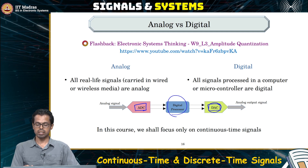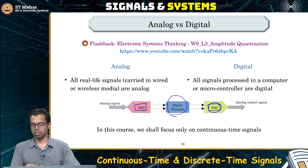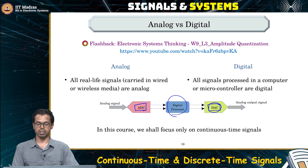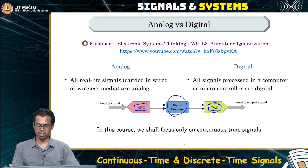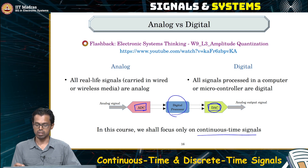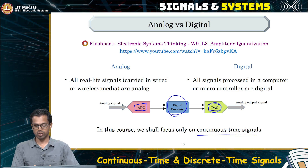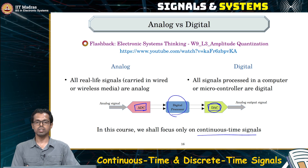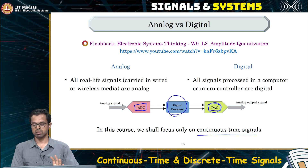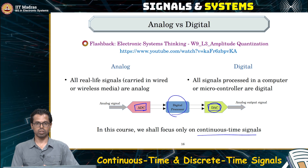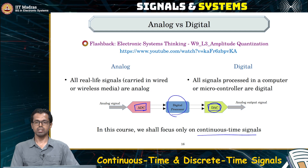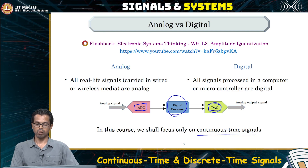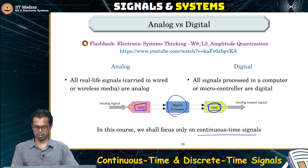In this course, we will stick to continuous time signals only. In later courses, we will study more about discrete time signals, their processing, and properties. This course focuses on signals which are continuous time and systems which process continuous time signals — for example, any circuit connected to a voltage or current source with RC components and inductors. The voltage across and current through such circuits are all analog continuous time signals, and each block is an analog system.